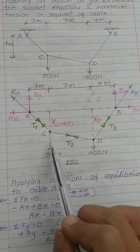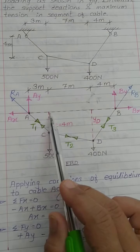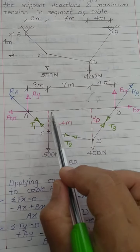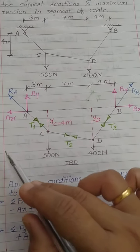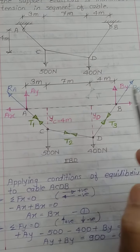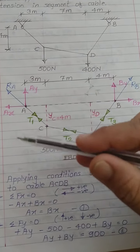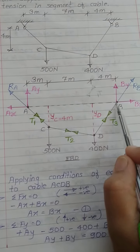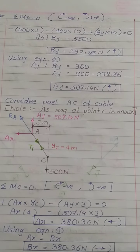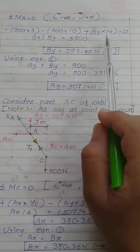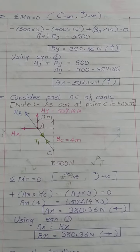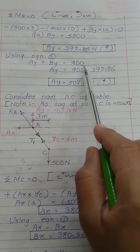Since the 500 N and 400 N forces are vertical, we use their horizontal distances from A. The moment equation becomes: −500 × 3 − 400 × 10 + By × 14 = 0. Solving this equation gives the value of By, which acts vertically upward.